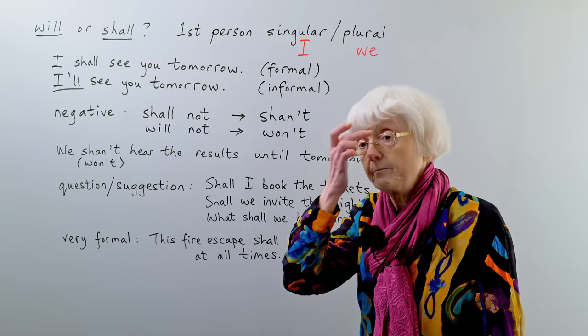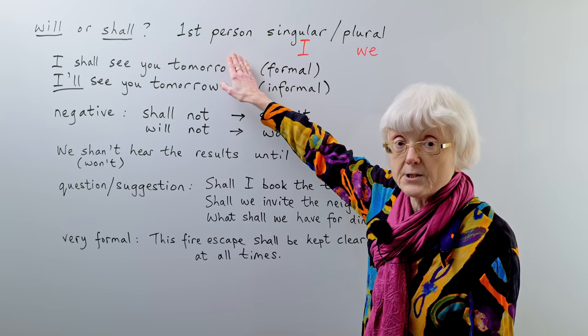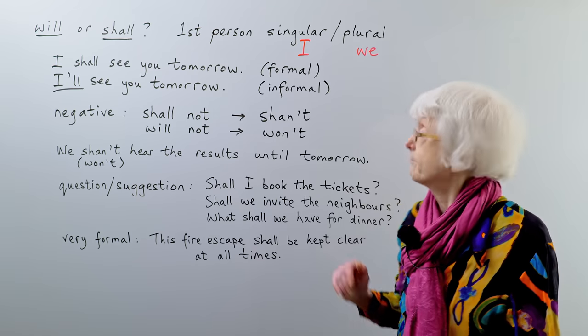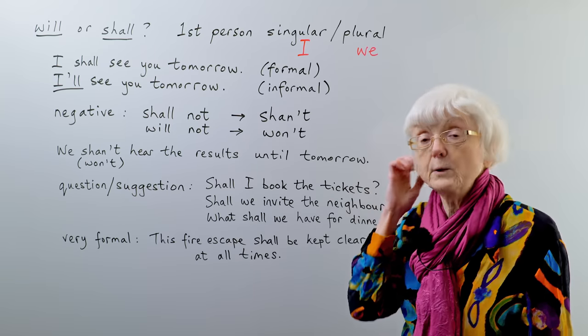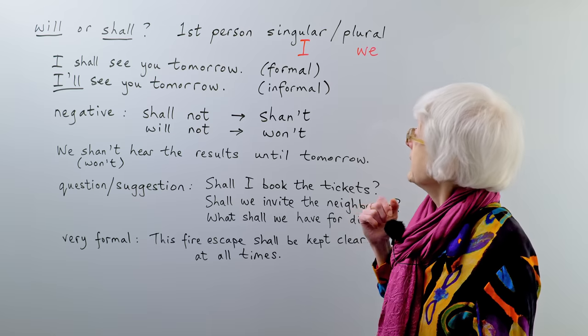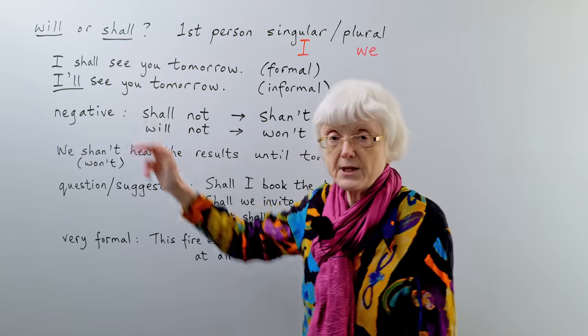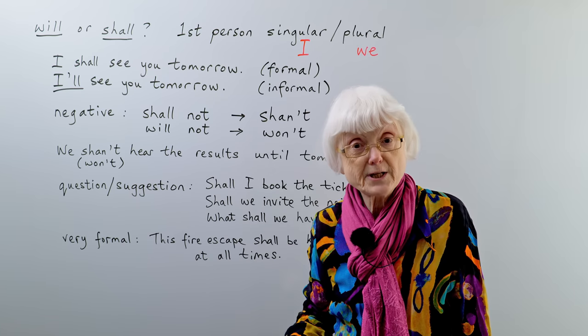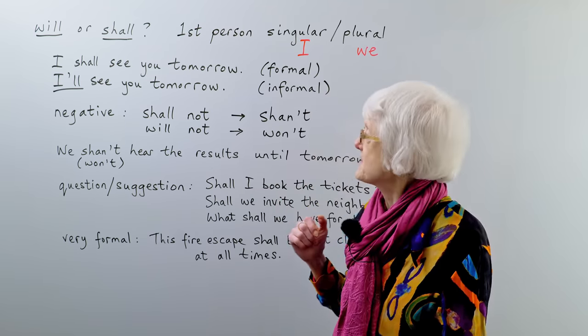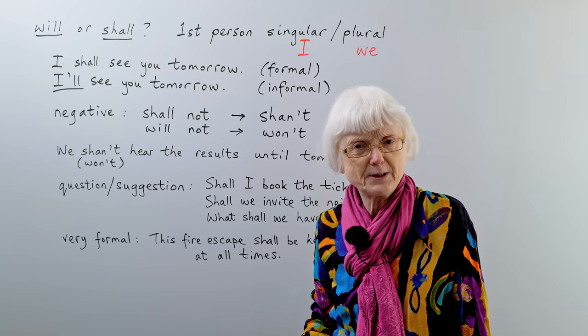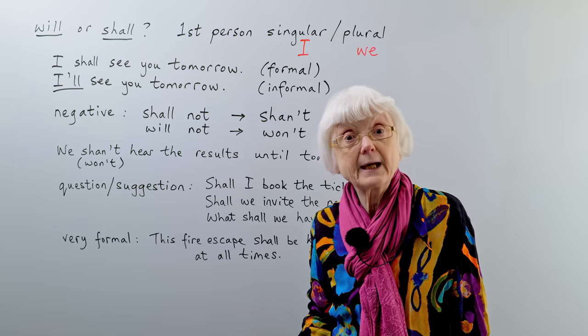Shall. It's usually only used with the first person, singular or plural, so I shall and we shall. Nowadays, it doesn't always sound very natural. It can sound a little bit too formal, a bit strange. So, if I said to a friend, I shall see you tomorrow, my friend might be a bit surprised because it sounds rather formal and a bit old-fashioned.